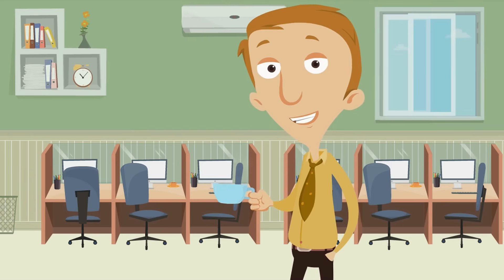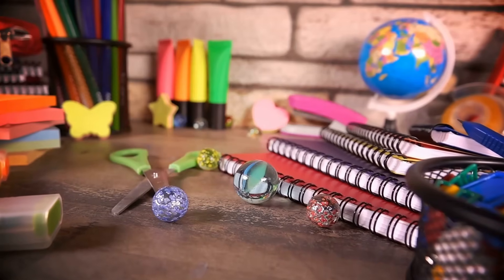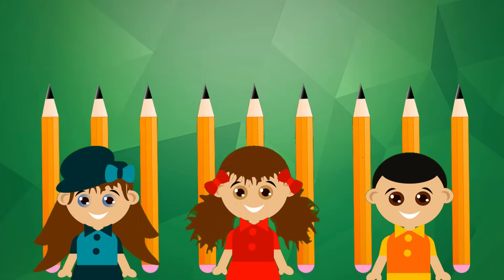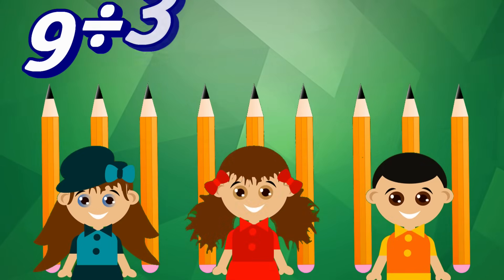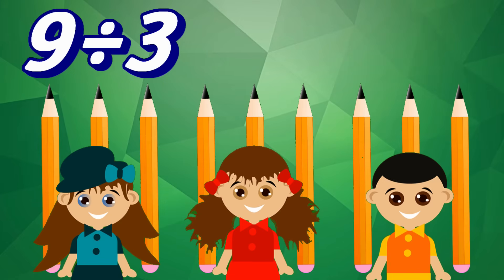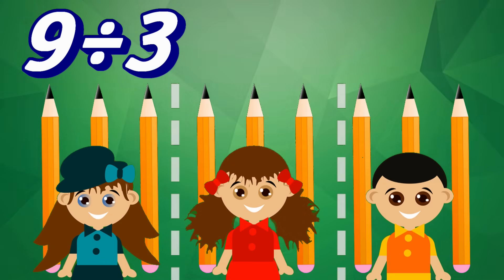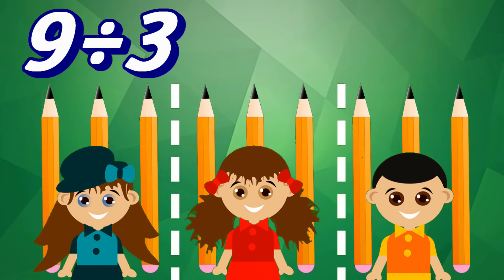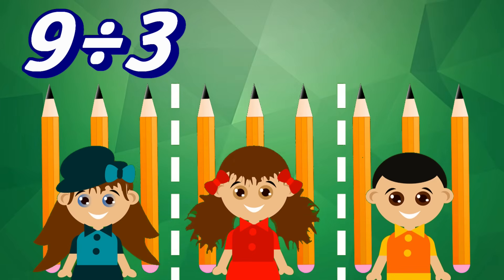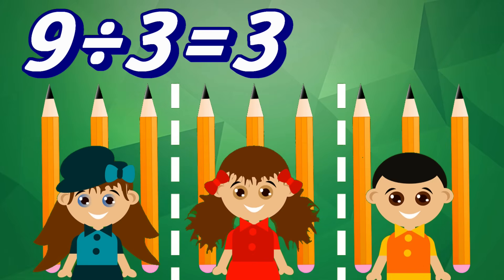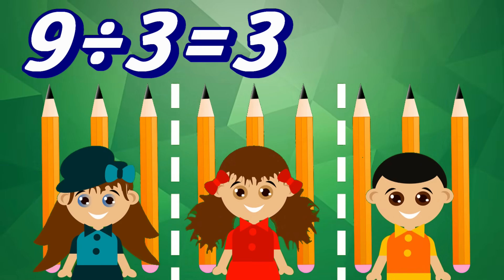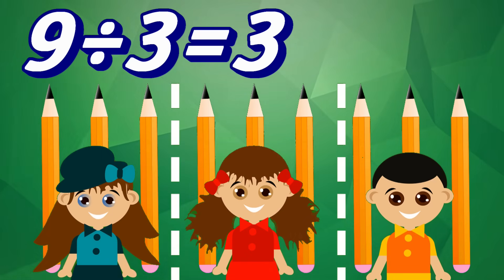Next, let's practice division with school supplies. Let's say there are nine brand new pencils that three students are going to split. Nine divided by three. We are dividing the nine pencils between the three students, so that the students each get the same number of pencils. When we divide nine by three, how many pencils does each student get? Yes, three. Great job. That means nine divided by three equals three.